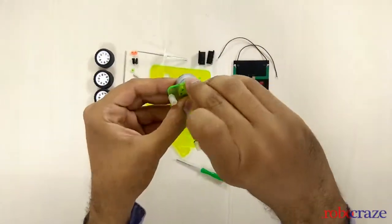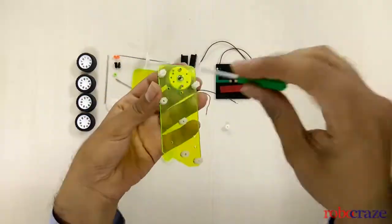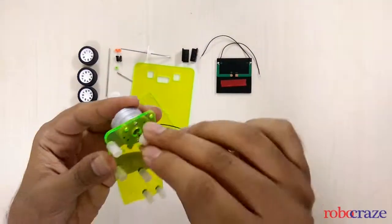It's a simple DC motor which we will screw into the lower chassis and after that we connect one gear to the motor.